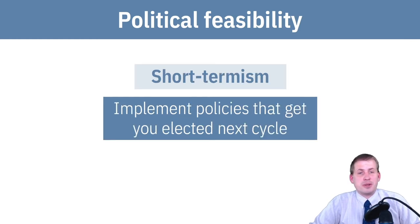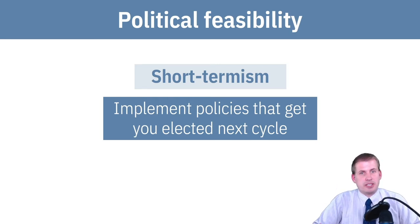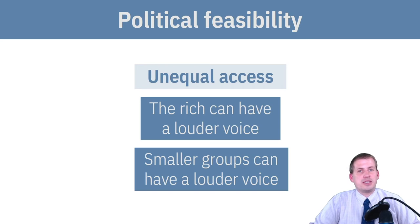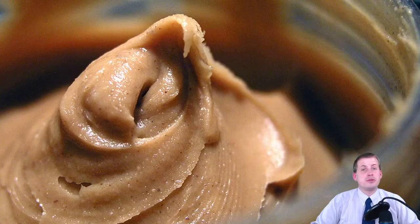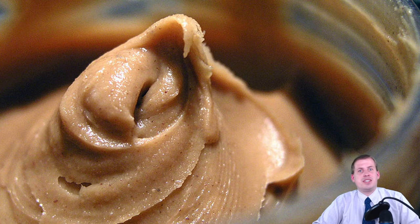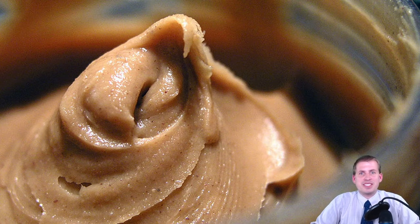So with those three types of government failure, let's go deeper. Short-termism means you implement policies that help you get elected next cycle — that's all you care about. The unequal access idea is that the rich and small groups have louder voices and can get directly involved in the policy process. That's why I had you do the three-part podcast series on the regulation of peanut butter in the United States.